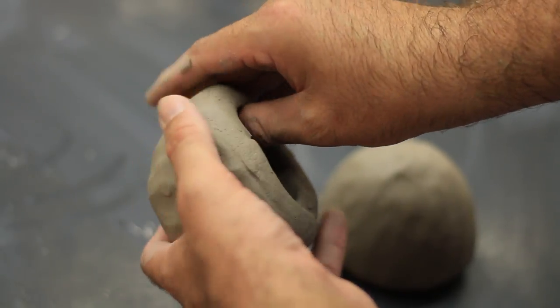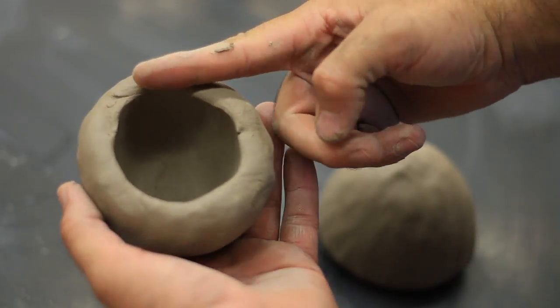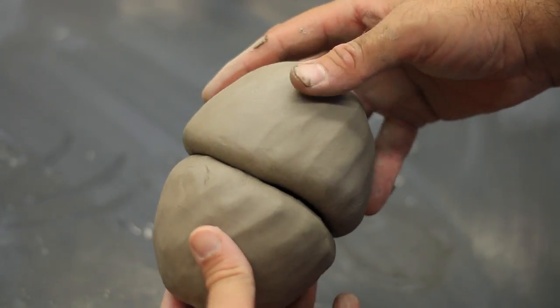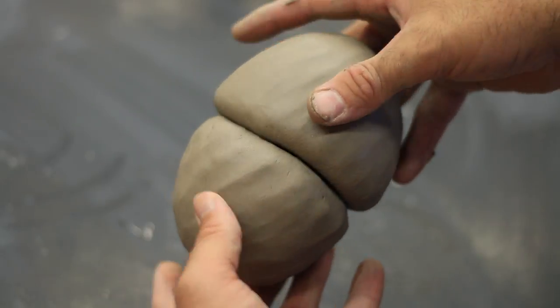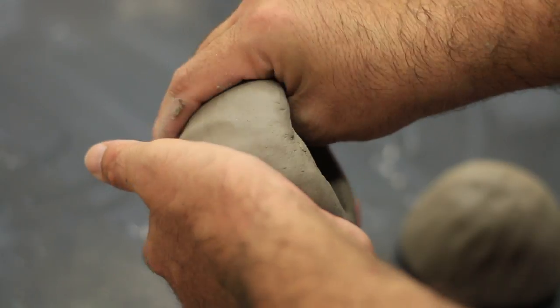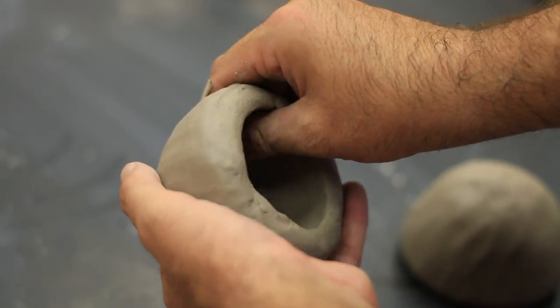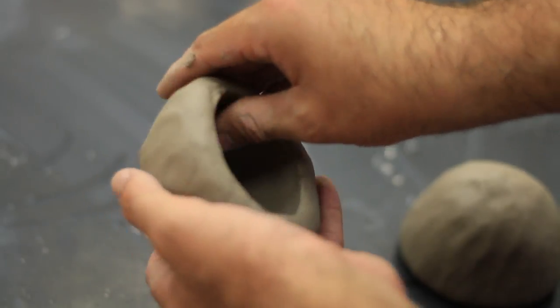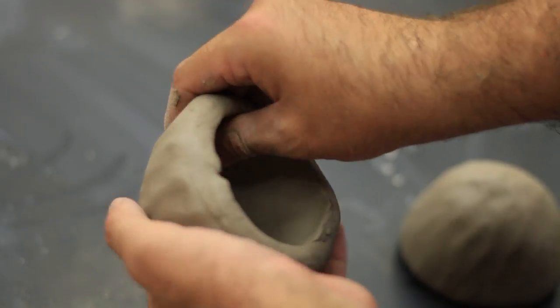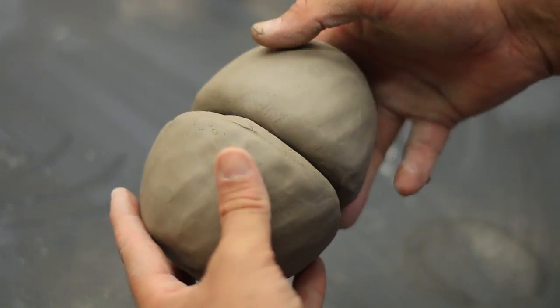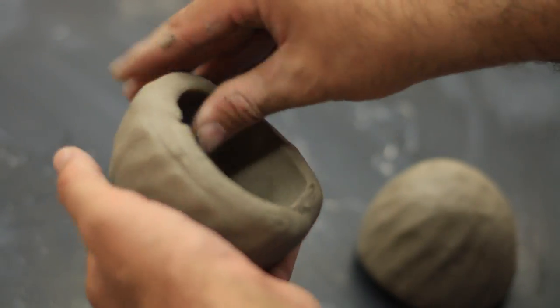You want to check periodically for two things. One, that the rim is the right thickness, and then two, check for size. As soon as the second lump of clay has gotten as big as the first lump of clay, then you're ready to go on to the next step. Pinch for a while, then check the size. Pinch for a while, check the size, and repeat this process until they're identical in diameter of the rim.